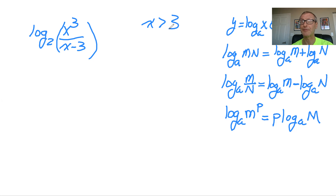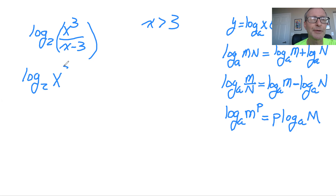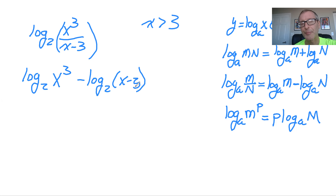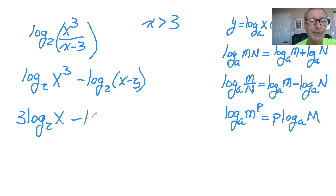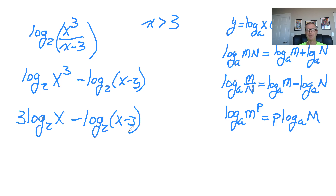We have a division, so we split it up: the numerator becomes positive and the denominator becomes negative. Remember, you can't split if there's a plus or minus inside — it's stuck that way. Then we use the power rule, so the three comes out front. That gives us 3 times log base 2 of x, minus log base 2 of (x minus 3). That's the most simplification you can do using the three properties to expand everything out.